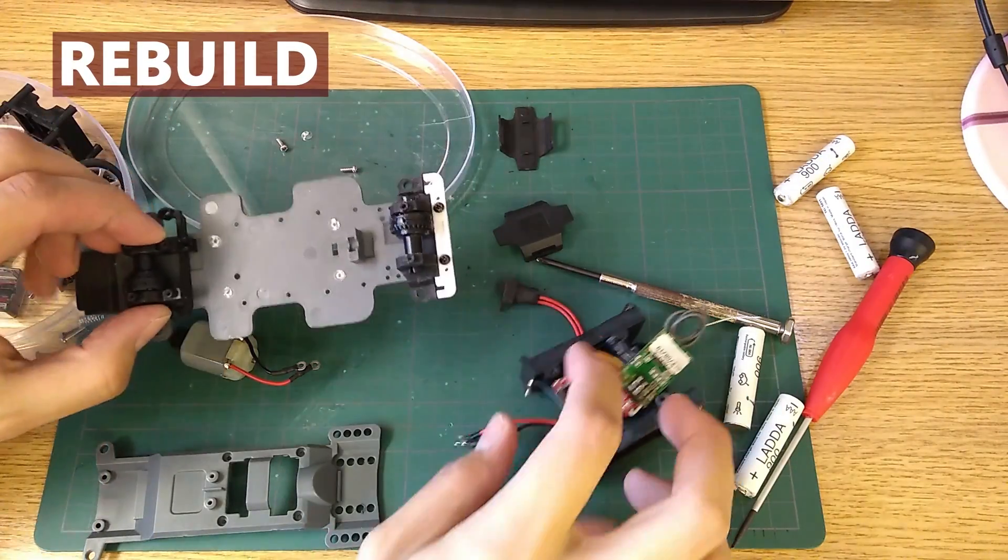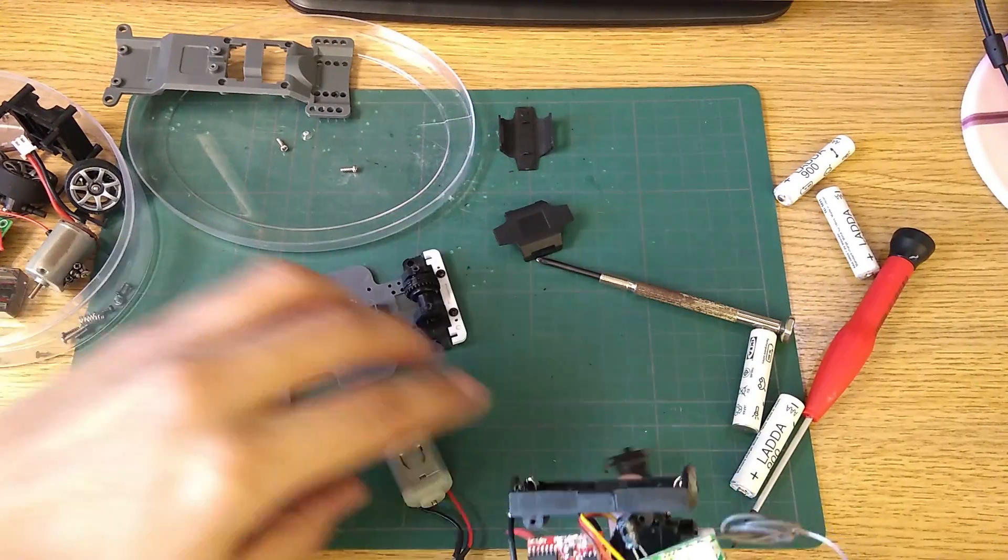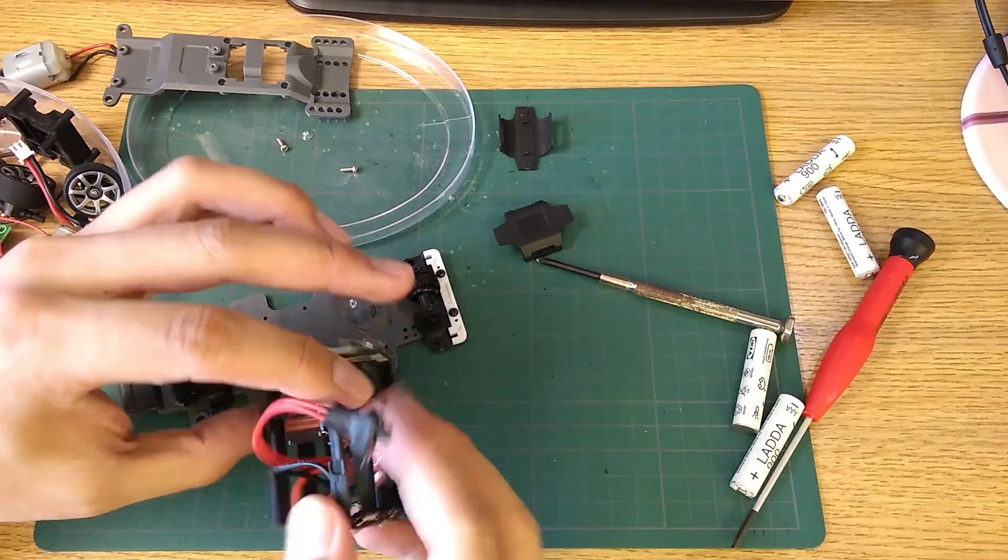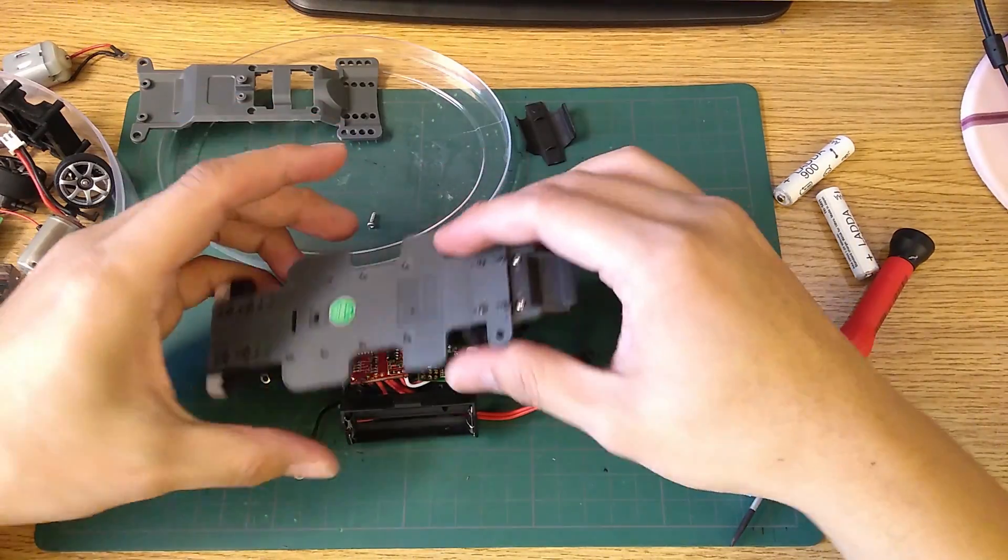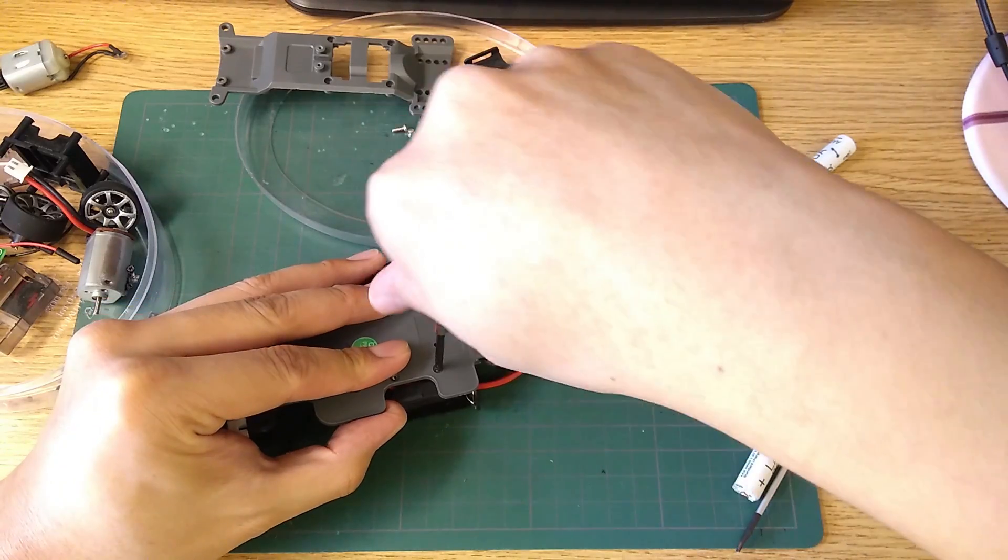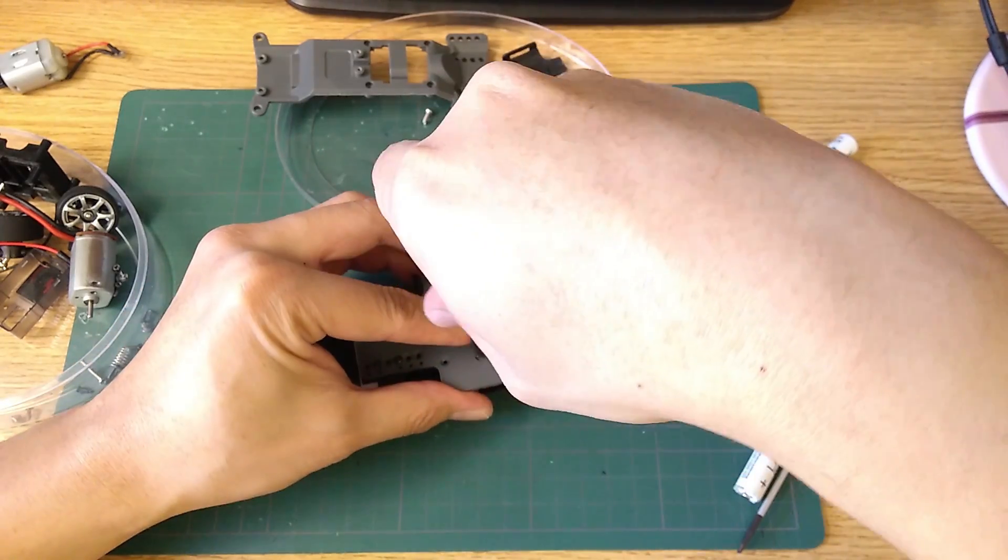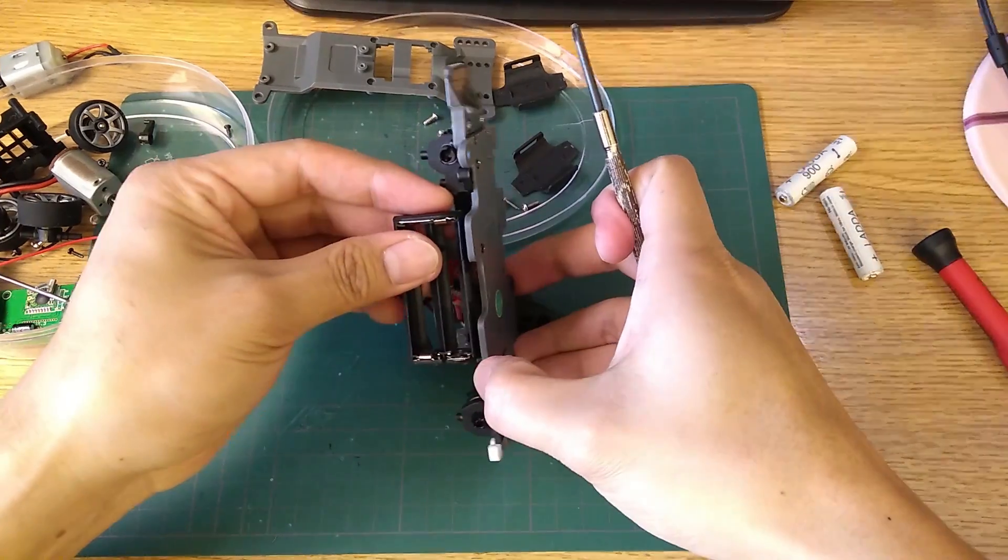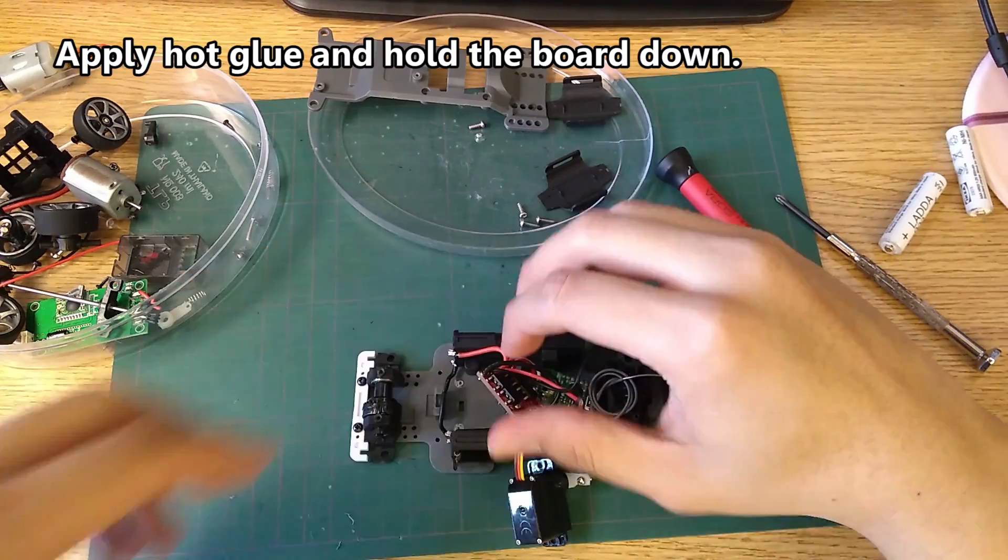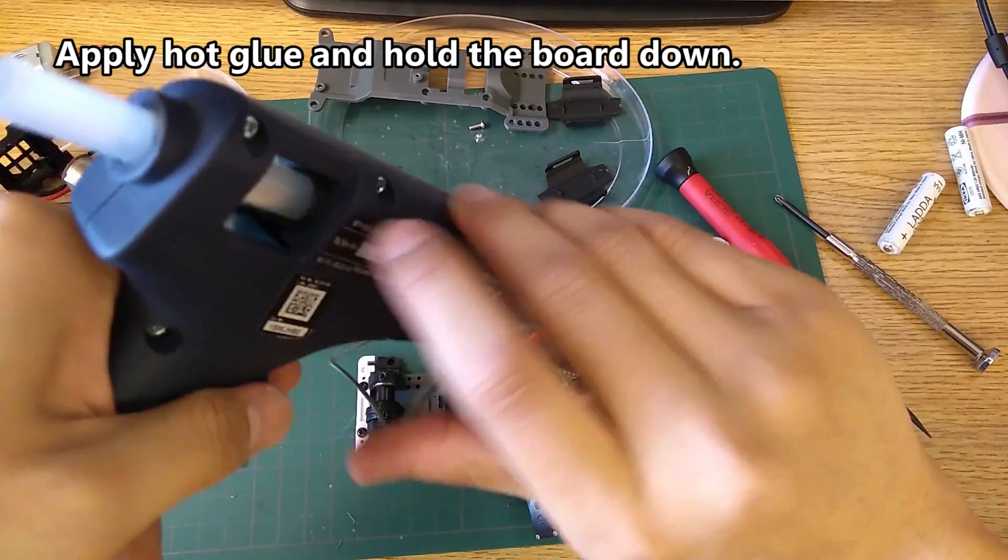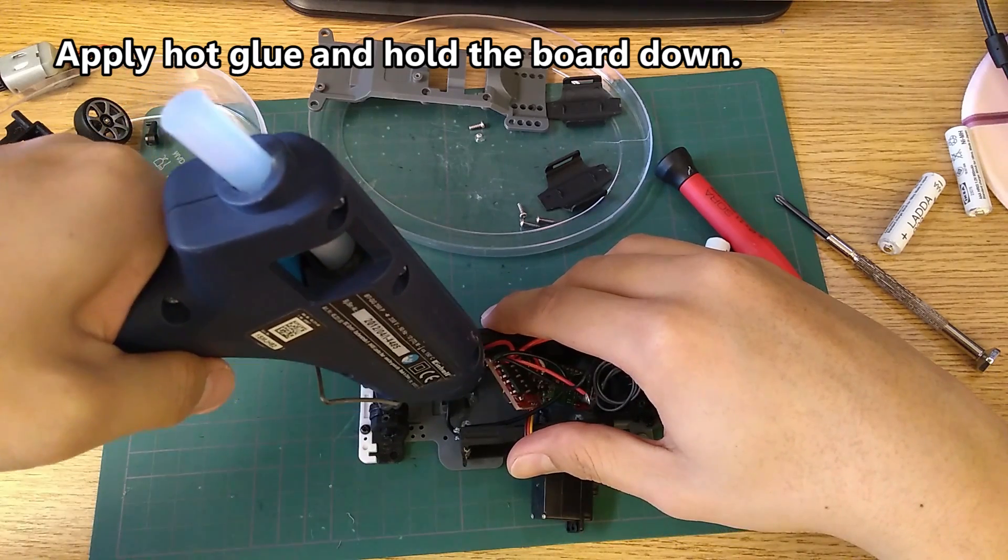Putting the car back together is almost the opposite of disassembling it. Except the first step is to glue the ESC and receiver down with hot glue. Obviously you need to take the servo off for this and mount the battery trays onto the chassis first. Apply the glue only just enough to hold the boards down. If you apply too much, the boards will sit higher and might rub against the center shaft.